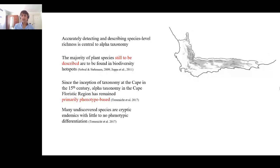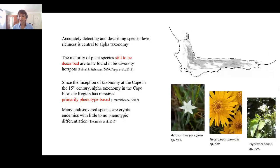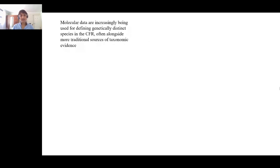We also know that many species still to be discovered have little to no phenotypic differentiation. In other words, they are strongly genetically differentiated and qualify as good species by other methods, but they are not morphologically distinguishable. They still qualify as species — so how do we go about describing them? These are some recent discoveries in the Cape Floristic Region.